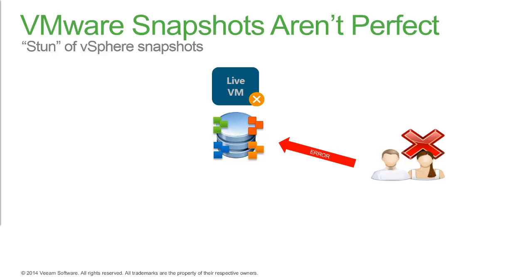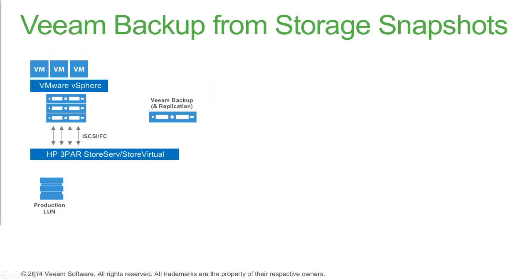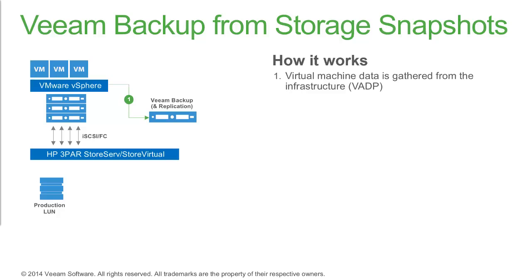Veeam and HP have addressed this issue by minimizing the need for VMware snapshots with the use of hardware snapshots. Here we're going to look at the steps Veeam takes as it backs up virtual machine data from storage snapshots. Veeam interacts directly with VMware's vStorage API for data protection to gather details about the infrastructure and the objects contained within the backup job. If enabled in the backup job, Veeam will then quiesce the VM using Microsoft VSS or VMware tools, followed by the creation of a VMware snapshot.